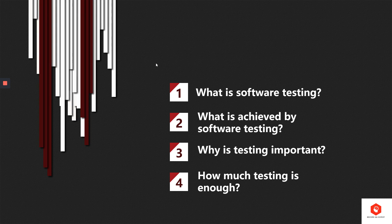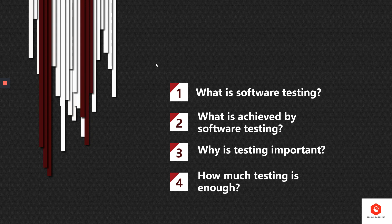The definition of software testing found in the literature is: Software testing is defined as an activity to check whether the actual results match the expected results and to ensure that the software system is defect free. It involves execution of the software component or system component to evaluate one or more properties of interest. Software testing also helps identify errors, gaps or missing requirements in contrary to the actual requirements. It can be either done manually or using automated tools.